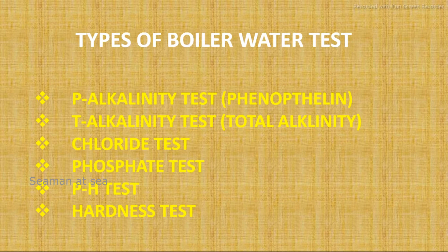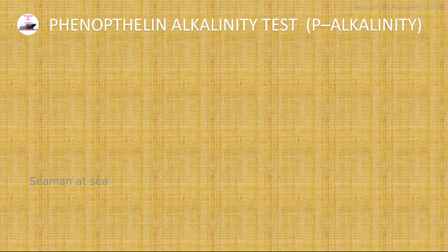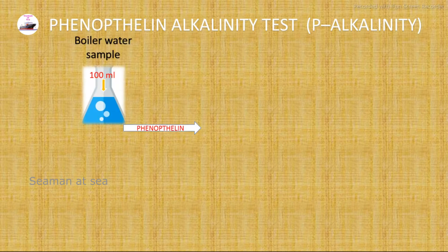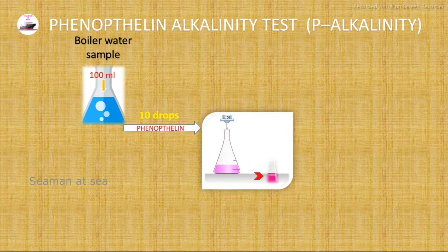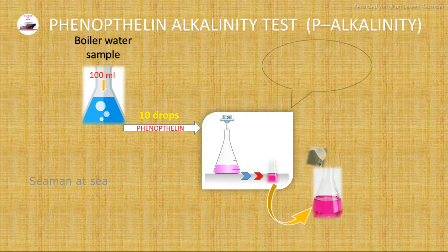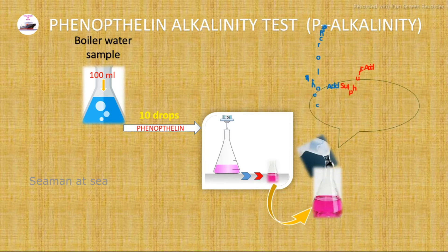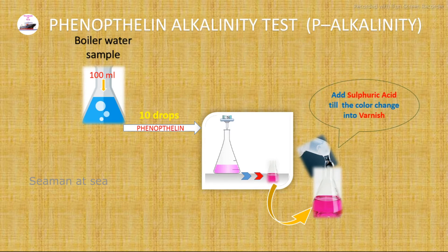Now we will see the testing procedure for each test. For the phenolphthalein alkalinity test, we have to take a boiler water sample of 100 ml. Once we have the 100 ml sample, we add 10 drops of phenolphthalein. The color will change to pink. Then we add sulfuric acid until the color changes to vanish, and we stop adding the sulfuric acid.